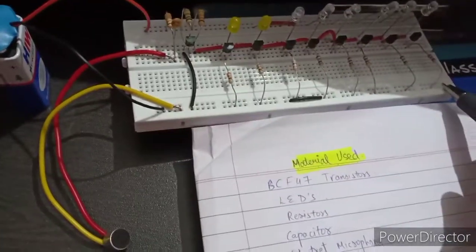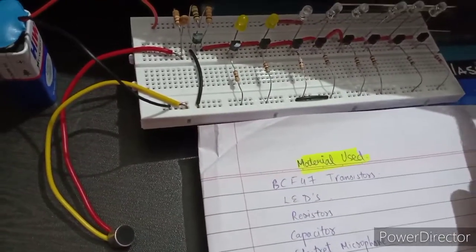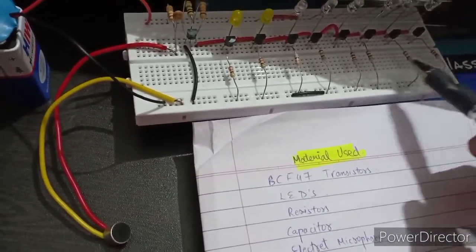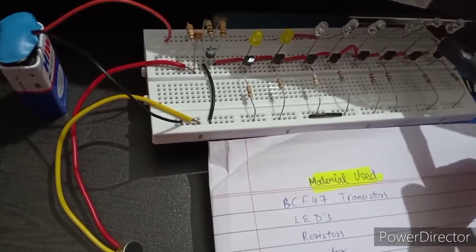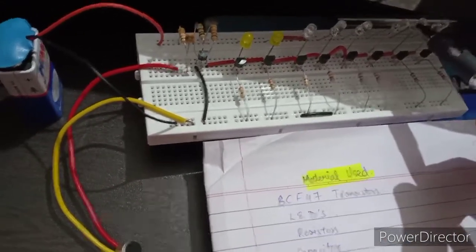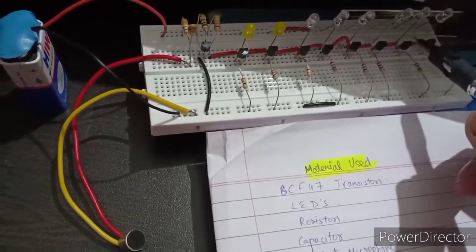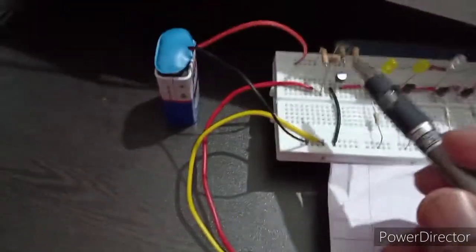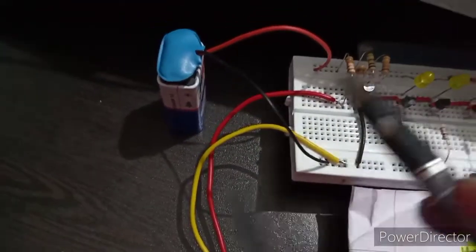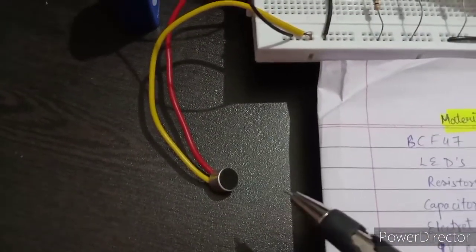This is the breadboard to make the connections. These are the resistors. This is an LED. These are the transistors and here is the capacitor. This is a 9V battery and this is an electric microphone.